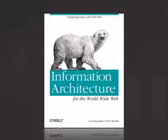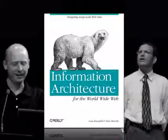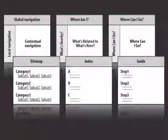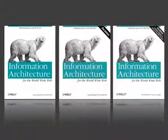Written from a librarianship perspective by Lou Rosenfeld and Peter Morville, this IA book was intended for a technology audience, presenting frameworks for designing and organizing the information within complex websites. With each new edition of the polar bear book, the definition of information architecture changed and grew.